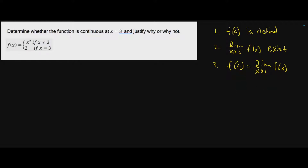Over here it says: determine whether the function is continuous at three, and justify why or why not. The first thing I'd like to do before I even do this problem is get a visual of what I'm looking at. The value I'm interested in is three. This says x cannot equal three — it can be everything else except three. It's x squared, which is going to look something like this. When x equals three, my y value is two. This orange dot is filled in here, and we want to know whether it's actually filled in. I can already tell just by knowing x squared that it's not, but we have to prove it mathematically.